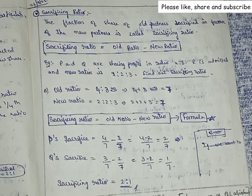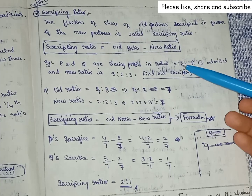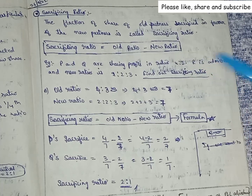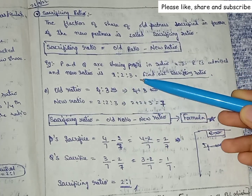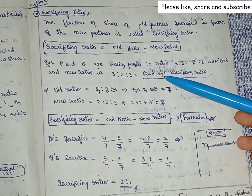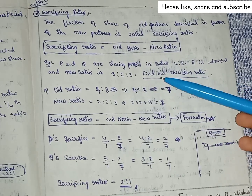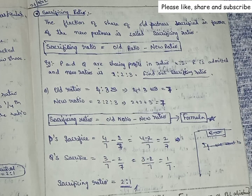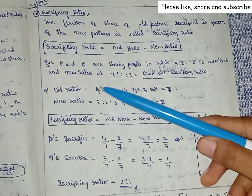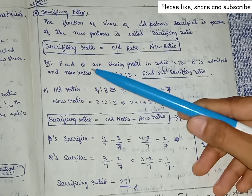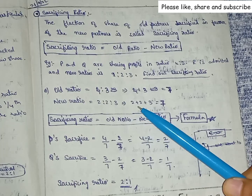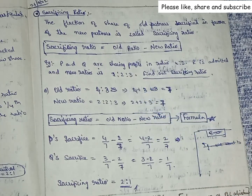Example: P and Q are sharing profits in the ratio 4 is to 3. Now R is admitted and the new ratio is 2 is to 2 is to 3. We need to find the sacrificing ratio. The old ratio is 4 is to 3, where P and Q are old partners. The new ratio is 2:2:3, and 2 plus 2 plus 3 equals 7; similarly, 4 plus 3 also equals 7.